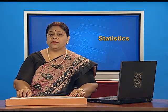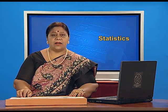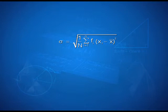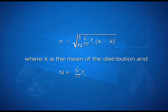Now let us study about the standard deviation of a continuous frequency distribution. The given continuous frequency distribution can be represented as a discrete frequency distribution by replacing each class by its midpoint. Then the standard deviation is calculated by the technique adopted in the case of a discrete frequency distribution. If there is a frequency distribution of n classes, each class defined by its midpoint xi with frequency fi, the standard deviation will be obtained by the formula sigma is equal to positive square root of 1 upon n into summation i varying from 1 to n of fi into xi minus x bar the whole square, where x bar is the mean of the distribution and n is equal to summation i varying from 1 to n of fi.